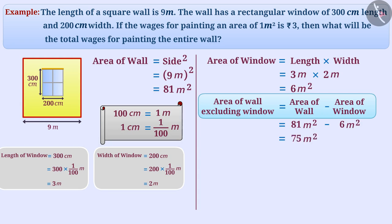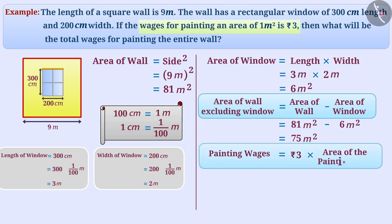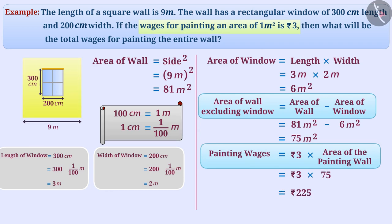That is, painting will be done on 75 square meters, and the painting wages are at the rate of 3 rupees per square meter. So, 3 rupees multiplied by the area to be painted equals 3 rupees multiplied by 75, which is equal to 225 rupees.